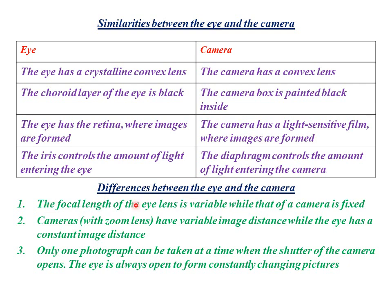The differences between the eye and camera: first, the focal length of the eye lens is variable — it can be increased or reduced — while the focal length of the camera lens is fixed. Second, for cameras with zoom lenses, they have variable image distances — you can vary the distance between the lens and where the image is formed — while the eye has a constant image distance: the distance from the retina to the crystalline lens cannot be varied. Third, only one photograph can be taken at a time when the camera shutter opens, but the eye is always open to form constantly changing pictures.